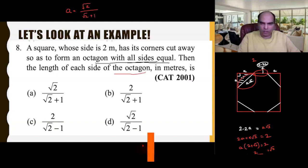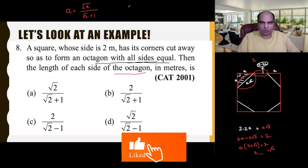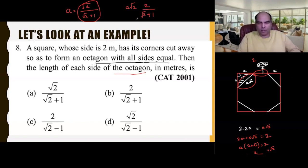But it's not the value of 'a' they've asked you, they've asked the value of the side of the octagon. Since we know that the side of the octagon is a√2, I multiply this expression by √2 and get the answer as 2/(√2 + 1). So option B is the right answer.